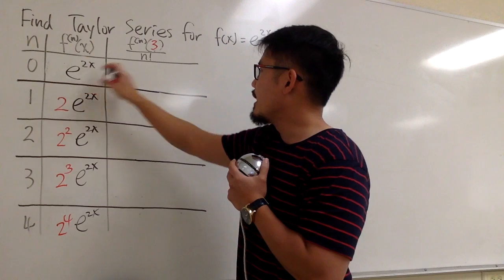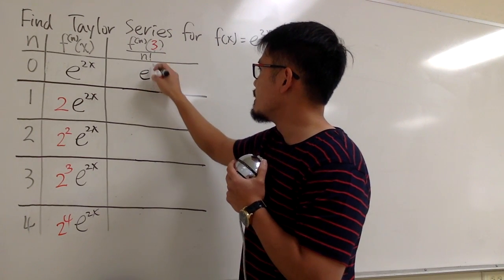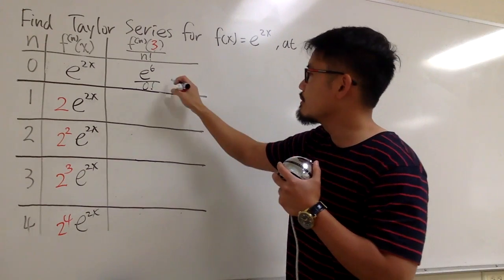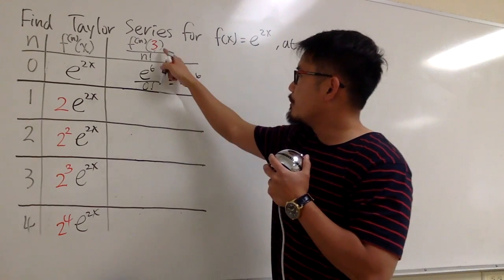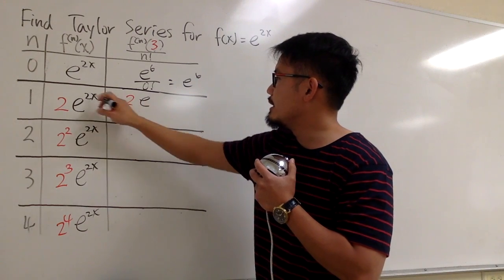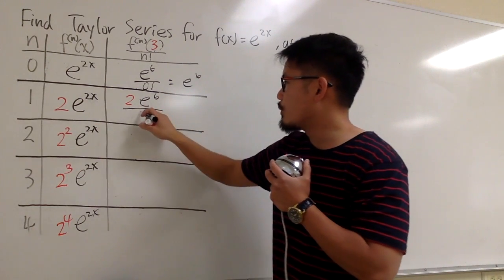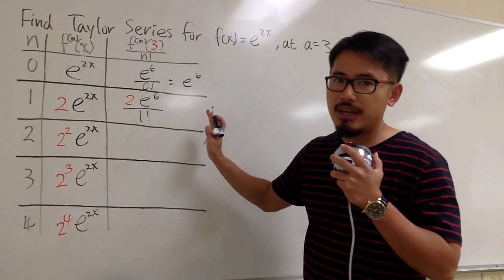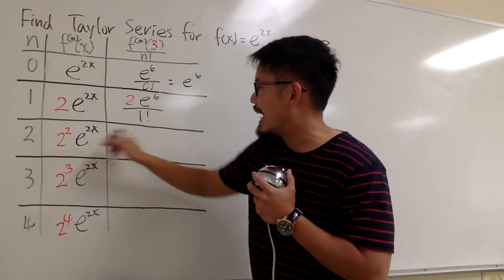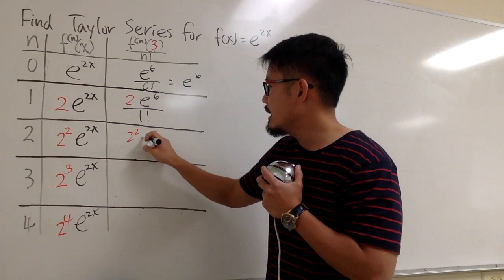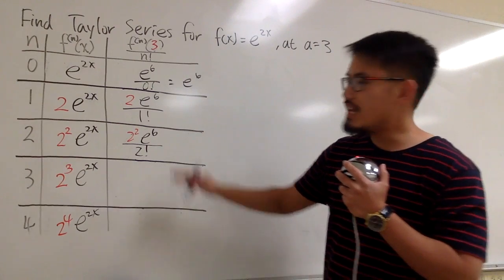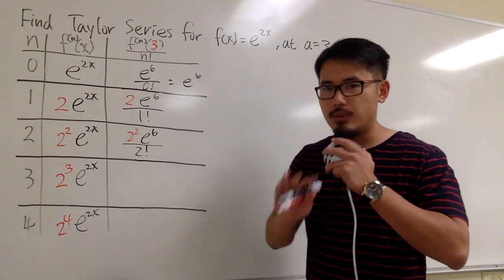For the first term (n=0), we plug in 3: it's e to the 6th, divided by 0 factorial, which is just e to the 6th. For the next one (n=1), plug in 3 to get 2 e to the 6th, divided by 1 factorial. For n=2, we have 2 to the 2nd power times e to the 6th over 2 factorial. We are not going to simplify anything at the moment.